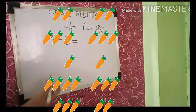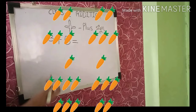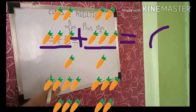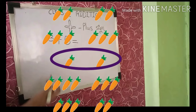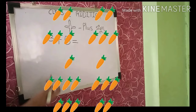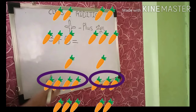Next we have carrots. Two carrots plus two carrots — how many? Four carrots. Next, three carrots plus three carrots — six carrots. One plus one is two carrots. Next, four carrots and three more — four plus three, we will get seven carrots.